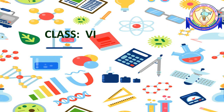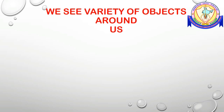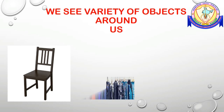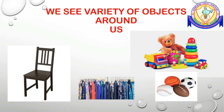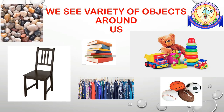Hello everybody, today we are learning the lesson: Sorting Materials into Groups. We see a variety of objects around us. All these things are different to look at — they are of different colors and shapes. They also have different properties. For example, chairs, clothes, toys, balls, books, stones, etc. Have you ever wondered what these things are made of?